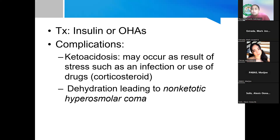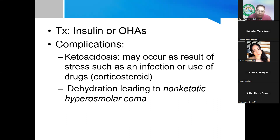Type 2 DM still carries complications including hypertension, cardiovascular diseases, and kidney failure, as well as ketoacidosis — because fat breakdown still occurs in an attempt to find another energy source, producing fatty acids and ketone bodies that lower blood pH. Ketoacidosis in Type 2 may also result from stress such as infection or the use of drugs like corticosteroids.